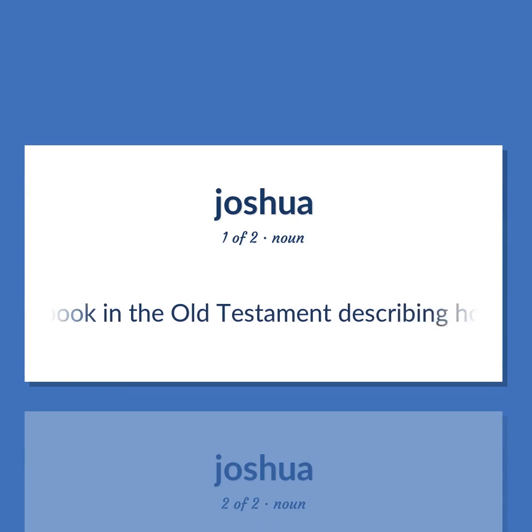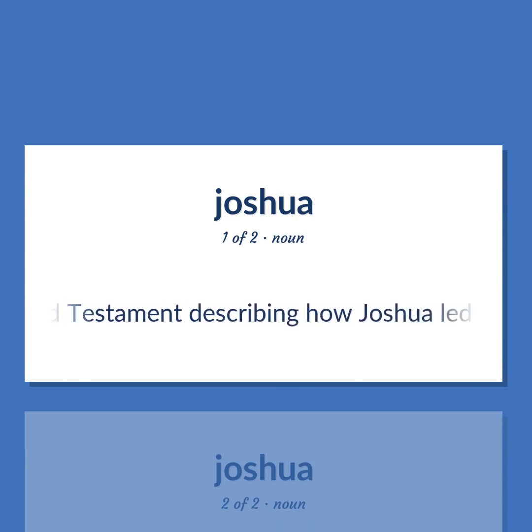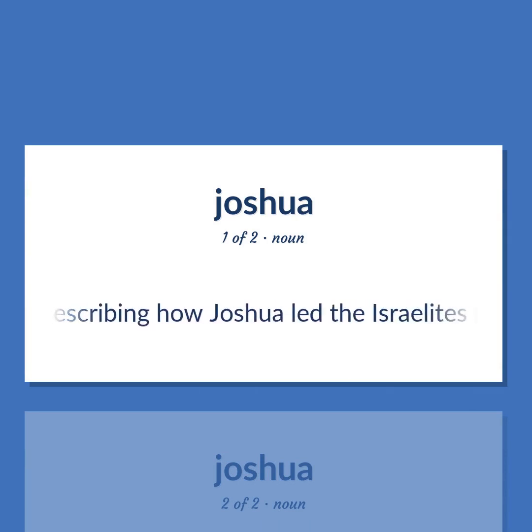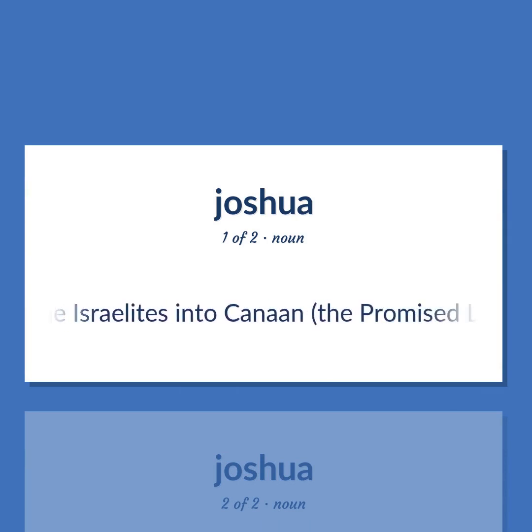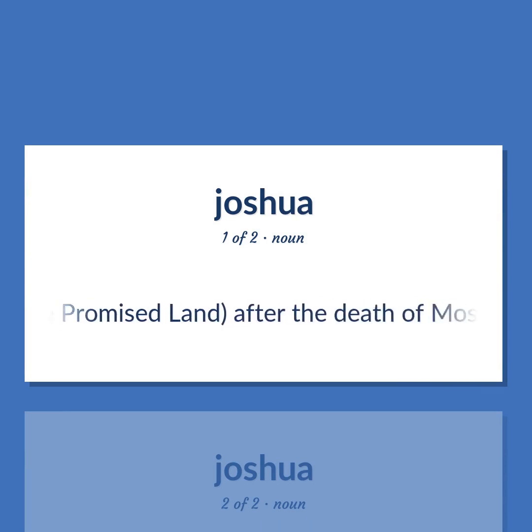A book in the Old Testament describing how Joshua led the Israelites into Canaan, the Promised Land, after the death of Moses.